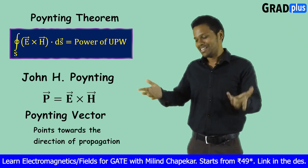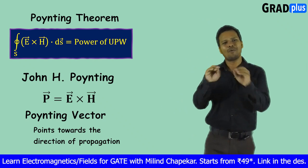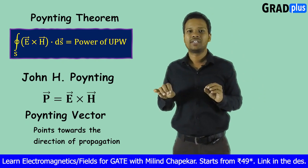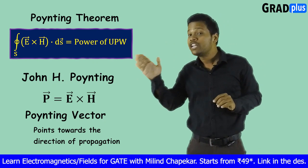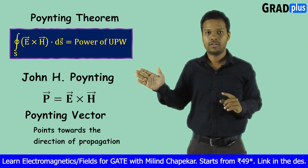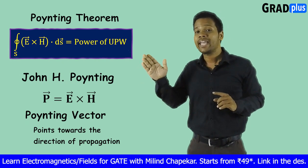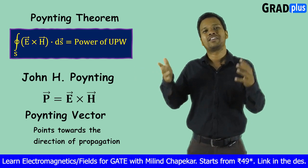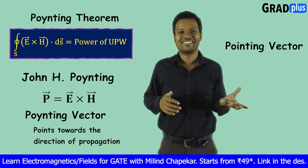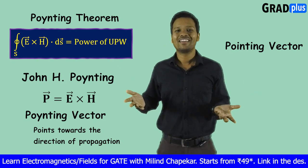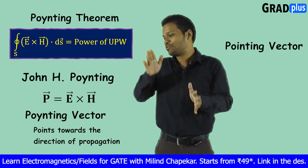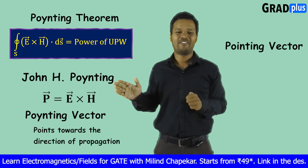So, it's simple — keep it simple. Basically, E cross H should be called the Poynting Vector because it is the name of the scientist, J.H. Poynting. But you can also write it as the Pointing Vector. Both ways you are correct, no problem. But actually, it should be the Poynting Vector.